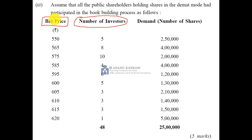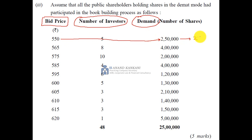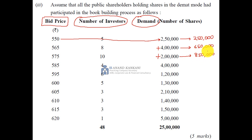You have to look at two things: the bid price and the cumulative demand. At ₹550, cumulative demand is 2,50,000 shares — that is 2.50 lakh, well below the 15 lakh limit. At ₹565, cumulative demand is 6,50,000. At ₹575, cumulative demand is 8,50,000. At ₹585, cumulative demand reaches 12,50,000 — still below the required 15 lakh threshold.